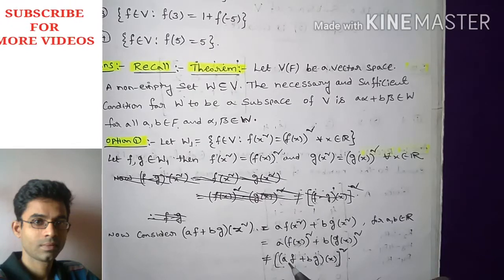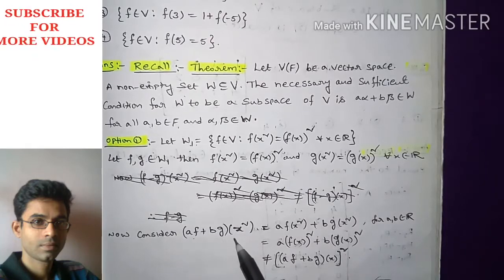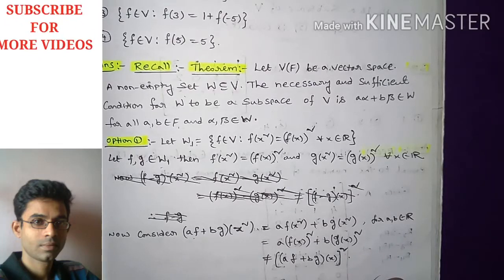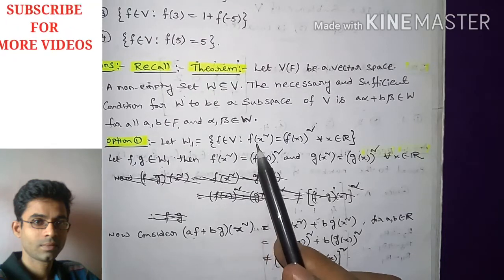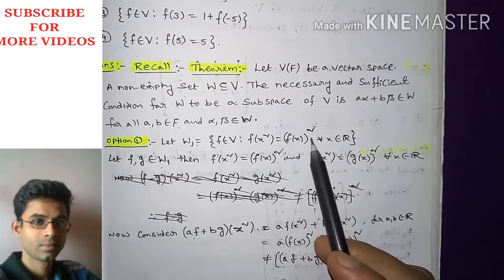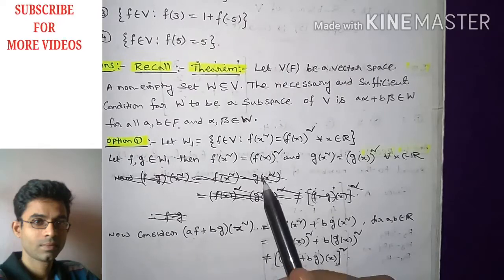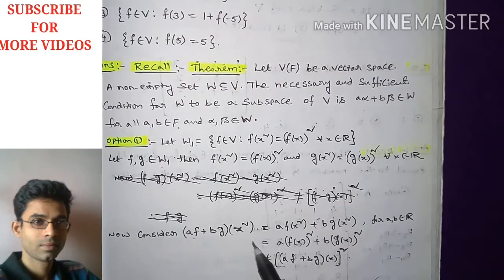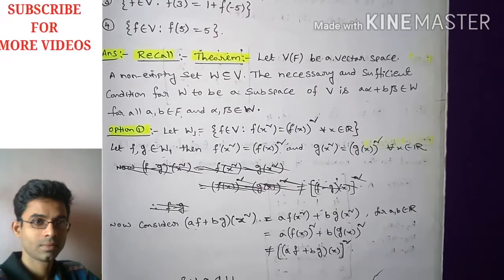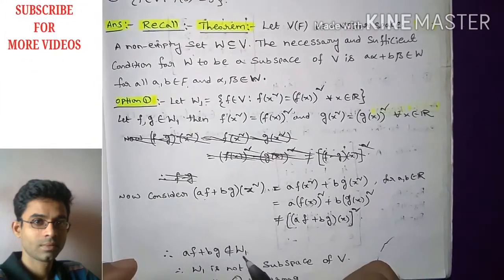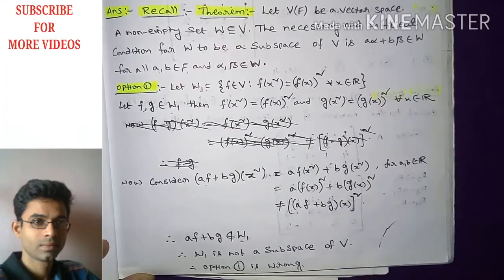Clearly this value a·f(x)² + b·g(x)² is not equal to (af + bg)(x)². So af + bg does not belong to W₁. The set W₁ requires f(x²) = f(x)² but (af + bg)(x²) ≠ (af + bg)(x)², so af + bg does not belong to W₁. Therefore W₁ is not a subspace of V, and option one is wrong.